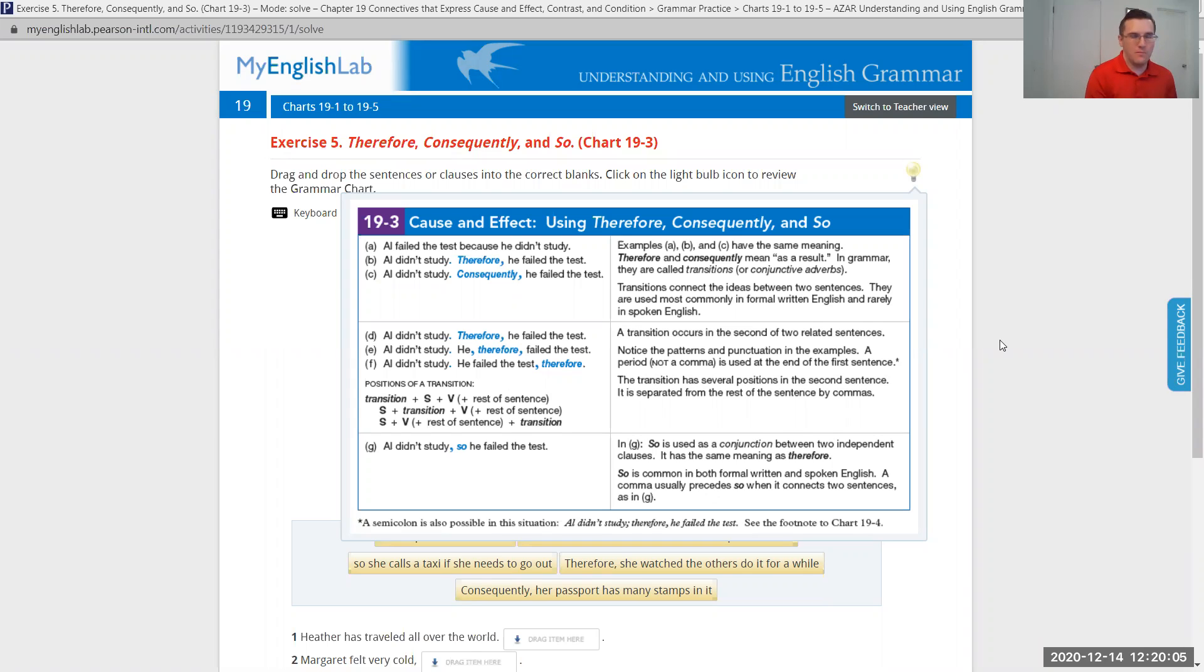Let's look at the first three examples. A, Al failed the test because he didn't study. So here we have the result, he failed, followed by the reason, because, the cause, he didn't study. Example B, Al didn't study, therefore, he failed the test. Example C, Al didn't study, consequently, he failed the test. So we have the reason first, followed by the result, the effect. Examples A, B, and C all have the same meaning. Therefore and consequently mean as a result. In grammar, they are called transitions or conjunctive adverbs.